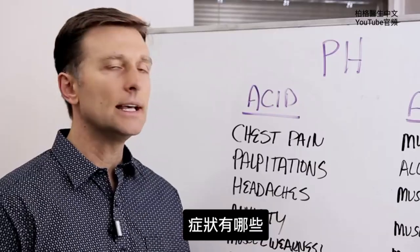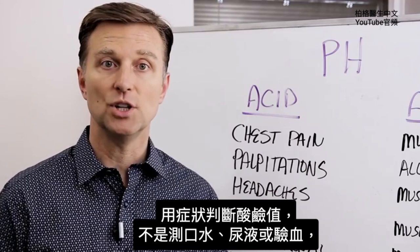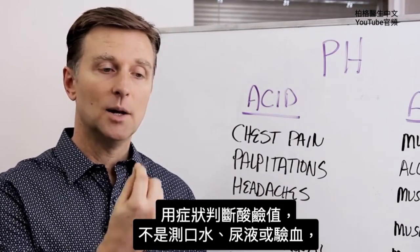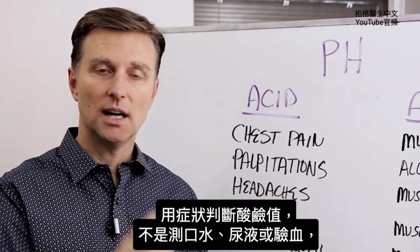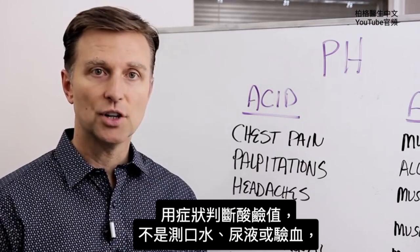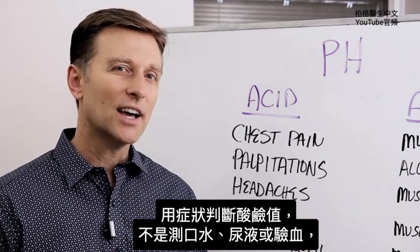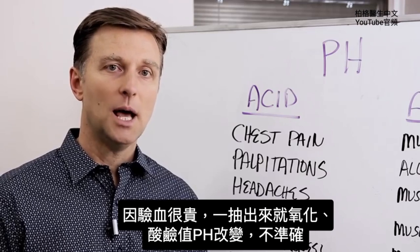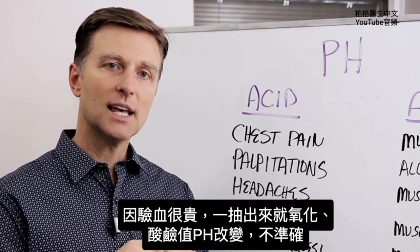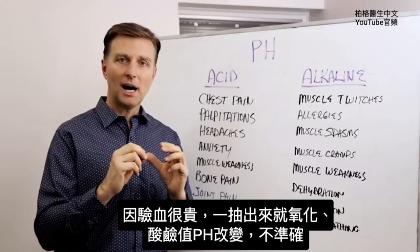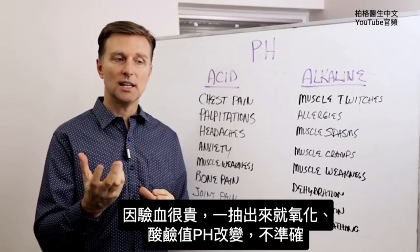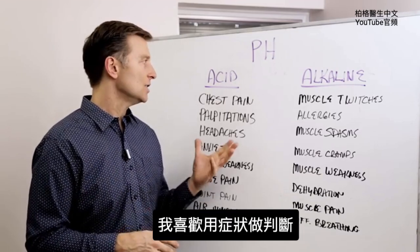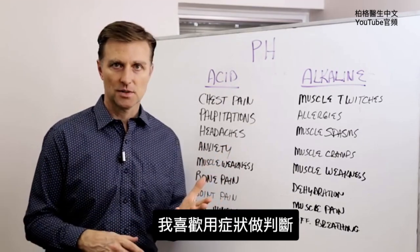Let's just talk about symptoms. You can use symptoms rather than a pH test for your saliva or your urine, because how are you going to check your blood? It's really an expensive test. And by the time you take the blood out of your body, it oxidizes with the oxygen and the pH shifts. So it's really hard to detect that. So I like to use symptoms first.